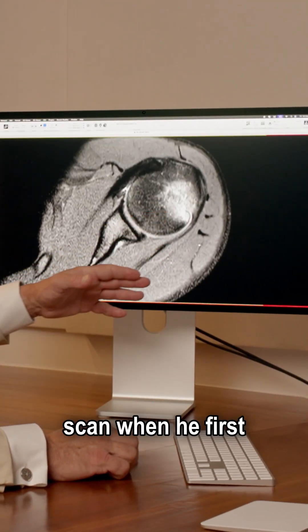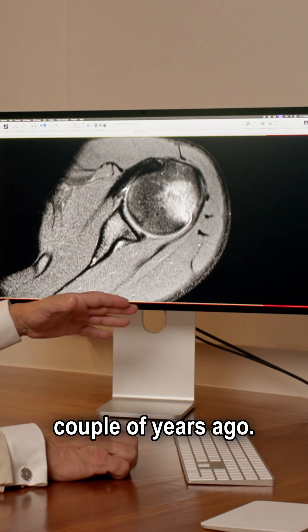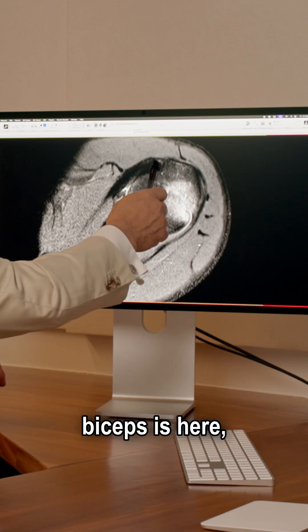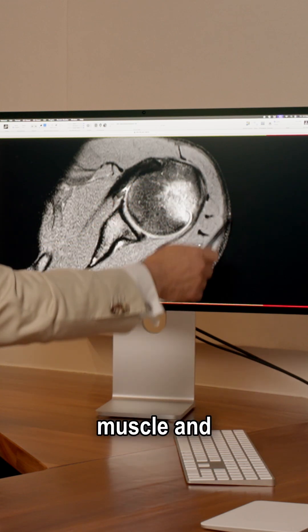This is the MRI scan when he first dislocated his shoulder a couple of years ago. This is the rotator cuff at the back. This is the back of the shoulder, rotator cuff at the front, biceps is here. You see the deltoid muscle then skin.